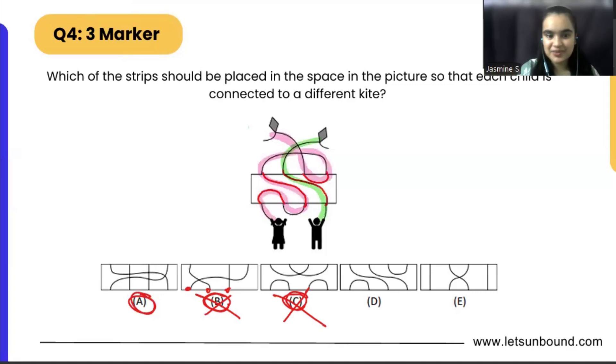So can we say that option number D is correct? But before confirming our answer, let's check option E as well. Okay, so it is like this and like this. Now let's see. Okay, so if we see from here, oops, oops, oops, no this is wrong, correct. The string is going from the girl and it is coming back to the boy, so not correct. We got our answer, it is going to be option D.